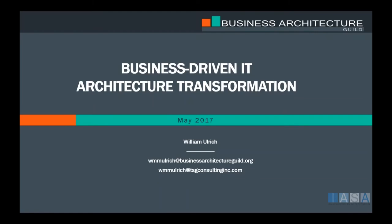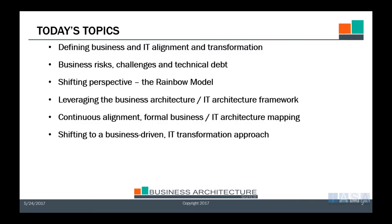Topics today: defining business and IT architecture alignment and transformation, talk about some risks, challenges, and technical debt. We're going to show you something called a rainbow model for thinking about transformation from a business and an IT perspective. We'll look at a framework for transformation, continuous alignment, and then we'll talk about shifting to a business-driven approach.